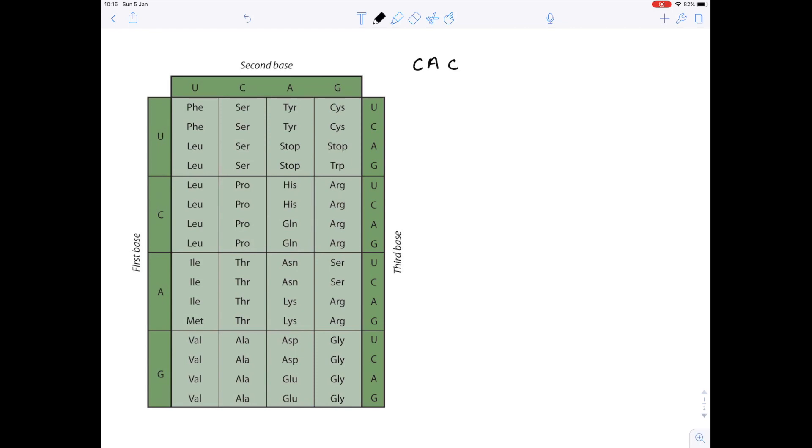Now the easiest way to show you what's going on is if I give you a sequence, such as this one. So remember, this is an mRNA single strand. Now the first thing to do is to break that up into its respective codons. So remember, each codon consists of three bases. There's the first codon, here's the second, third, and fourth. And I'm going to list them here. So the first codon is CAC.